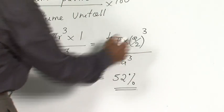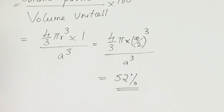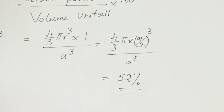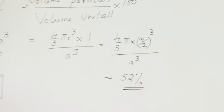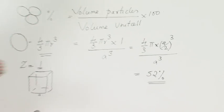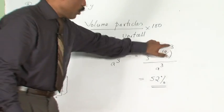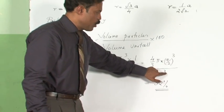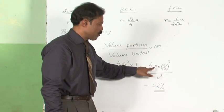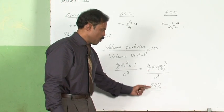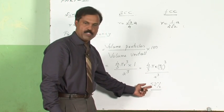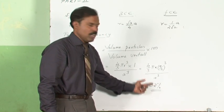The a³ terms cancel out. You substitute the value of π and work it out — it comes out to be 52 percent.